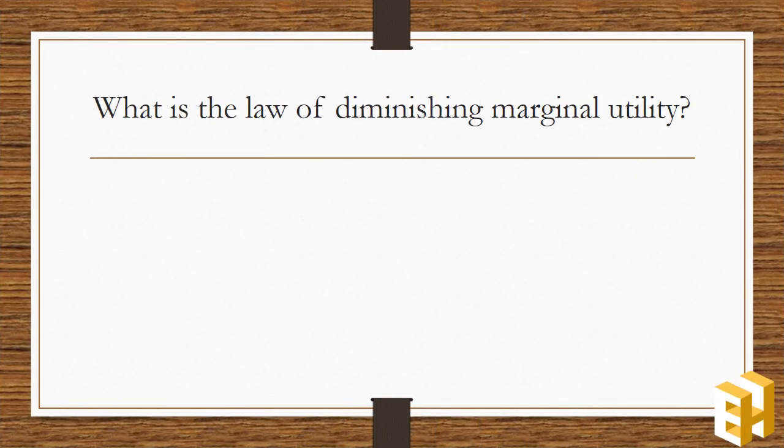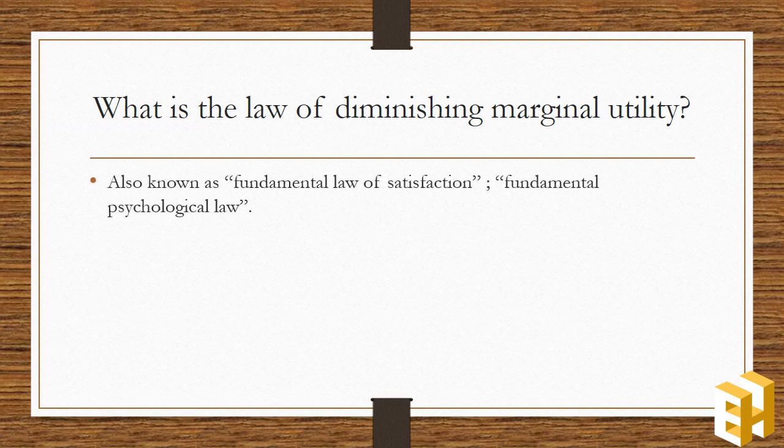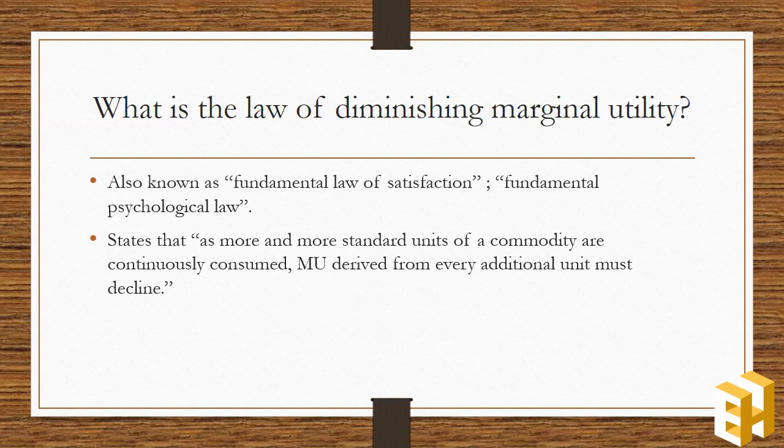It now becomes important to know what is the law of diminishing marginal utility, also known as fundamental law of satisfaction or even fundamental psychological law. It states that as more and more standard units of a commodity are continuously consumed, marginal utility derived from every additional unit must decline. In simple words, marginal utility is declining in nature when the units of a commodity are consumed continuously.